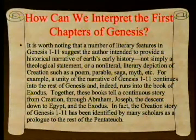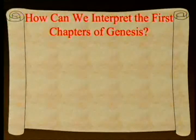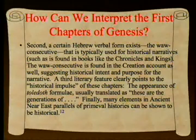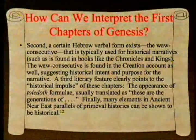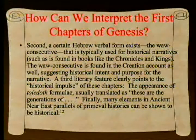Together, these books tell a continuous story from creation through Abraham, Joseph, the descent into Egypt, and the Exodus. The creation story of Genesis 1–11 has been identified by many scholars as a prologue to the rest of the Pentateuch—that's probably the consensus view in spite of what you might read sometimes. A second feature is a certain Hebrew verbal form, the Wayyiqtol or Waw-consecutive, typically used for historical narratives such as Chronicles and Kings. Stephen Boyd does an interesting statistical analysis showing that 70% of the verbs in the creation account are Waw-consecutive, in the higher range of narrative history, suggesting historical intent.